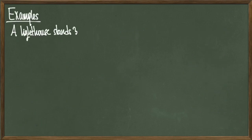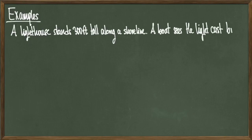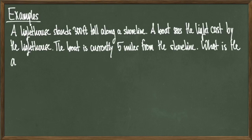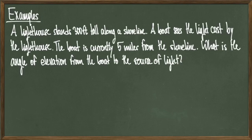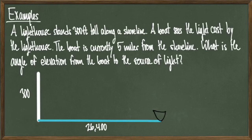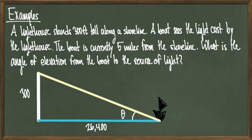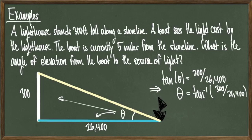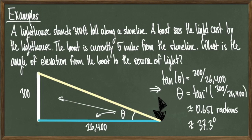For our last example, a lighthouse stands 300 feet tall along a shoreline. A boat is 5 miles, or 26,400 feet, from the shoreline. What is the angle of elevation from the boat to the light source? Drawing the triangle, we have the opposite side of 300 feet and the adjacent side of 26,400 feet relative to angle theta at the boat. This means we use the inverse tangent: theta equals tangent inverse of 300 divided by 26,400. Using a calculator, this gives 0.651 radians or 37.3 degrees.